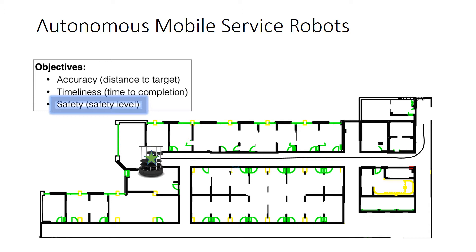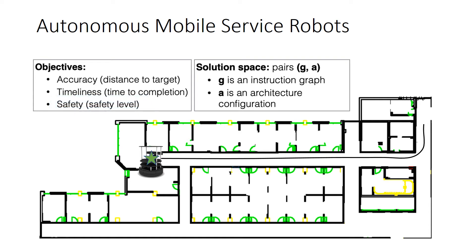In this context, a solution to the problem is a pair containing two elements. The first is what we call an instruction graph — a specification of the actions the robot should carry out to complete its mission. The second is an architecture configuration of the robot — a specification of the set of components, parameters, and how they are connected at runtime to enable the robot's functionality.